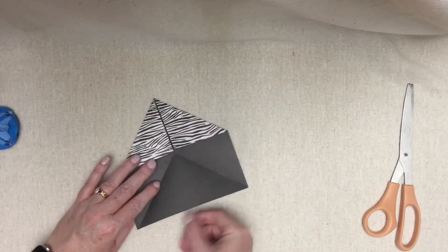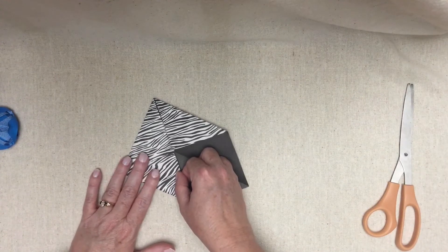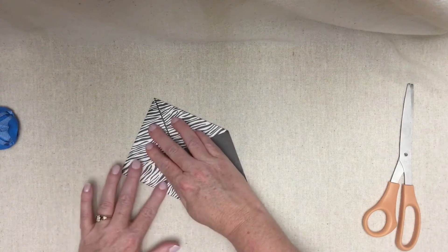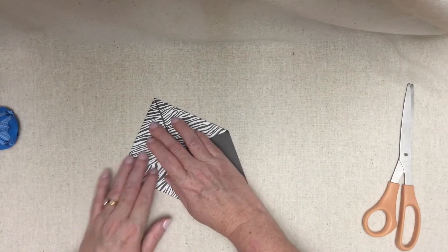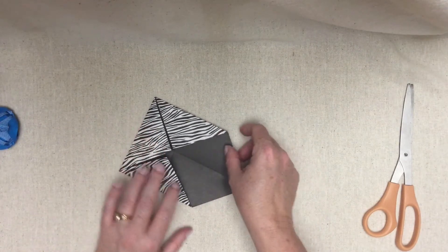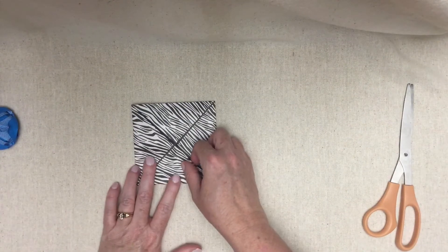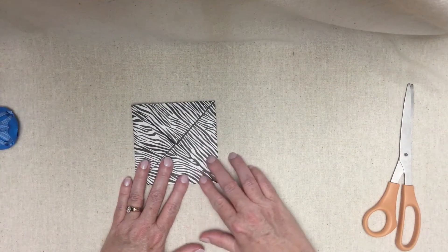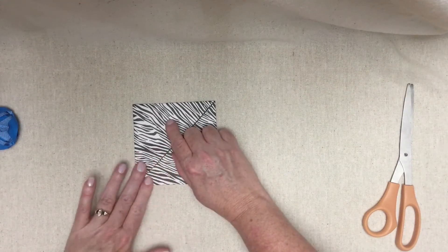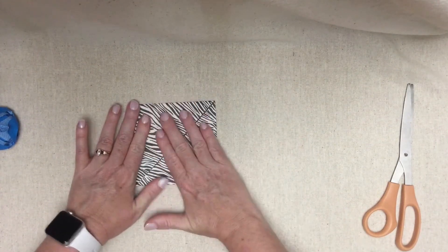And then I'm going to turn the paper and I'm going to fold in the next tip to meet the center. Okay. Sort of looking like an envelope now, isn't it? And as you might guess, I'm going to take that last tip and fold it into the center. And I'm going to go around the edge and just crease everything a little more strongly.